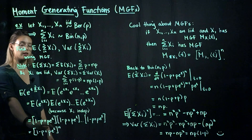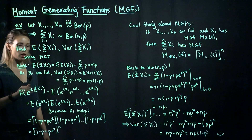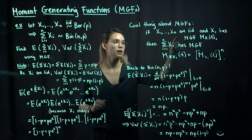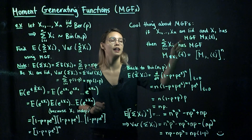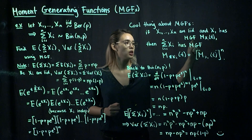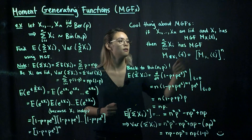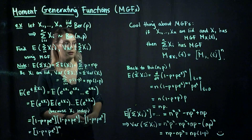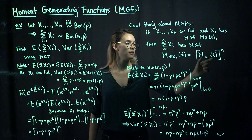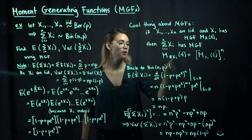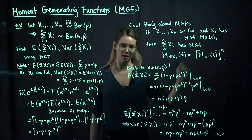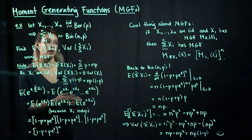This is our MGF for the binomial random variable. A key insight about MGFs: if we have a random sample where x1 through xn are iid, and we know one has MGF mx(t), then the MGF for the sum of the random variables is simply the MGF for one of them raised to the nth power.